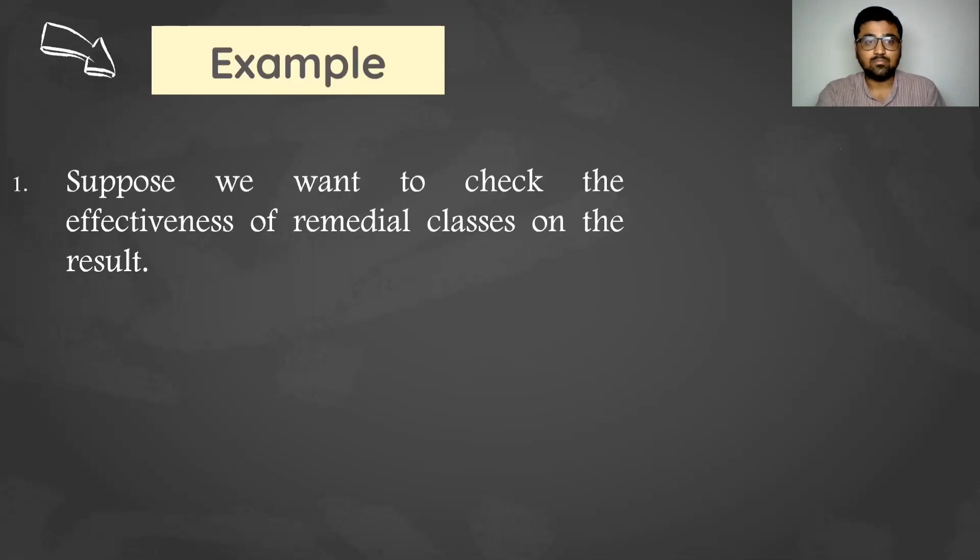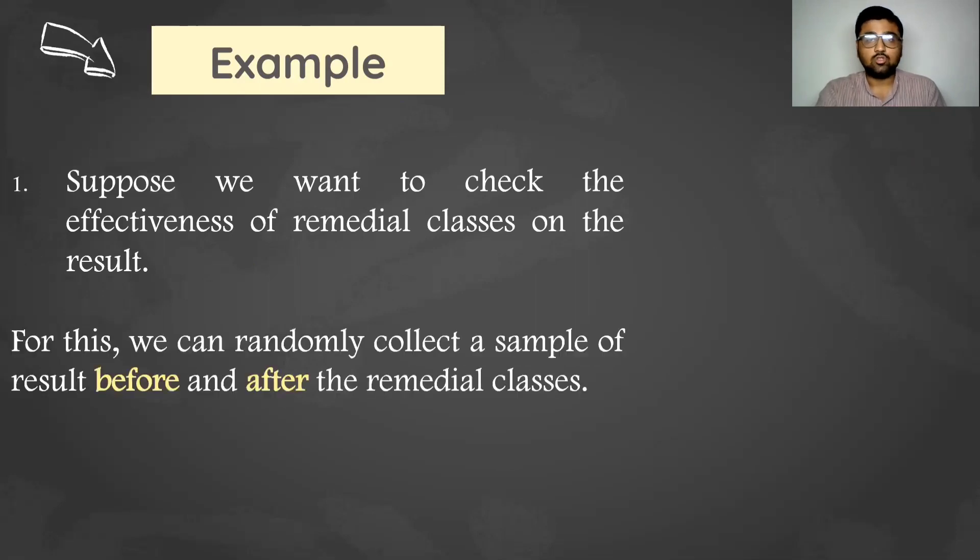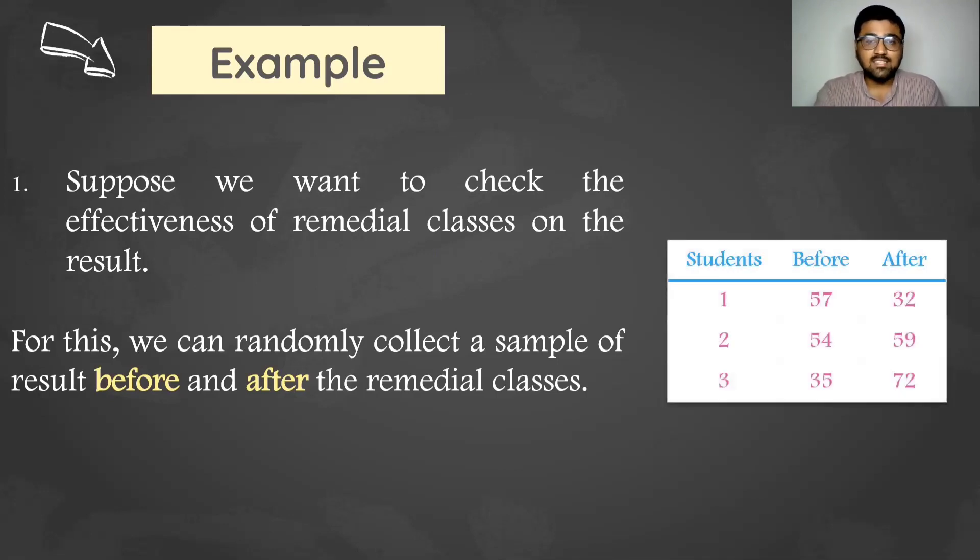Let's take this example. Suppose we want to check the effectiveness of remedial classes on the result. We can randomly collect a sample of result before and after remedial classes. Here we are collecting the data from the same observation before and after remedial classes and that makes a pair.